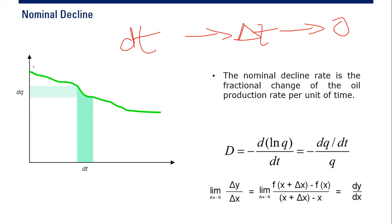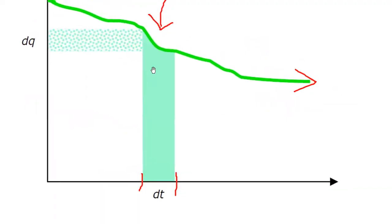For example, you have this continuous function of production history. The cumulative production is basically the area underneath this curve within the limit of dt. If you zoom in, you can see the green area — this is the area underneath the curve within an interval of dt, which can be infinitesimally small. So the cumulative production within this dt is the area underneath the curve — a very accurate and detailed computation.